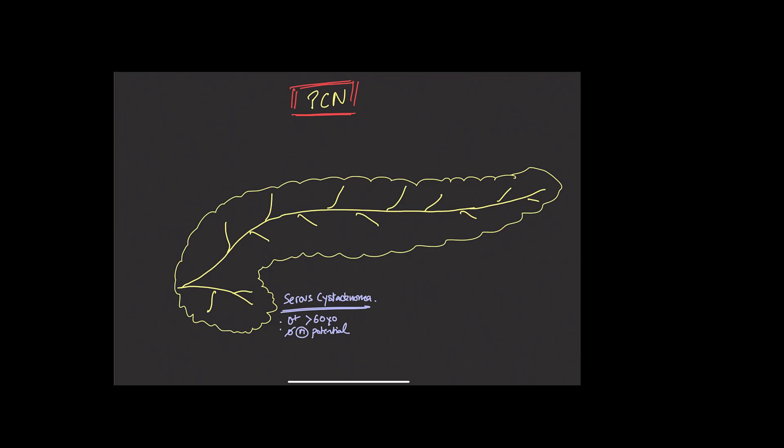On imaging, it has a variety of appearances, most commonly the microcystic or honeycomb appearance where it's composed of multiple small cysts clustered together, typically more than six cysts, each of which are less than two centimeters. It has lobulated borders, as you can see on this drawing schematic, and on occasion you're going to see calcifications associated with serous cyst adenomas, and when these are present, they'll be in the central portion of this mass.